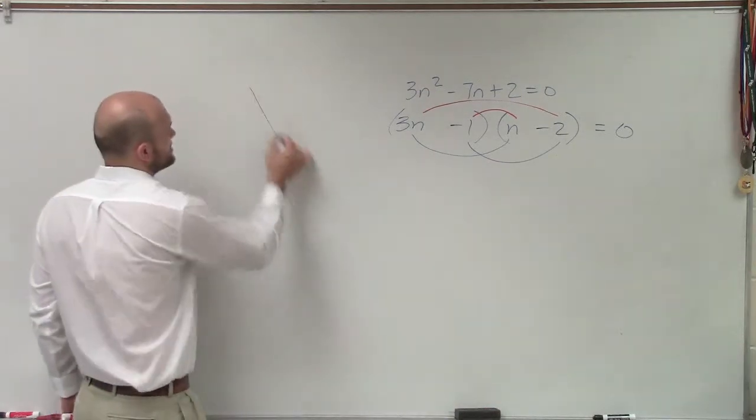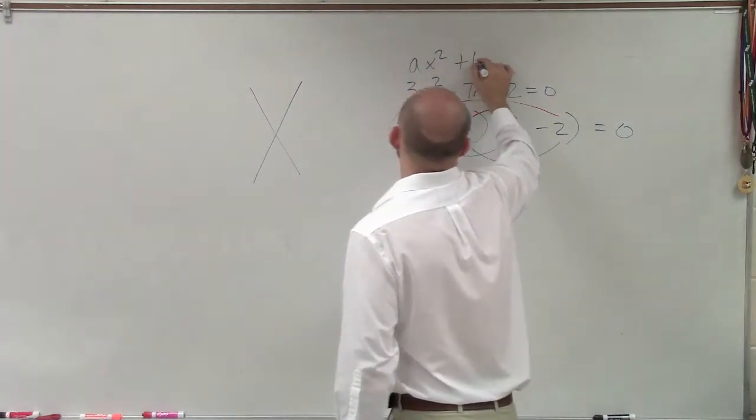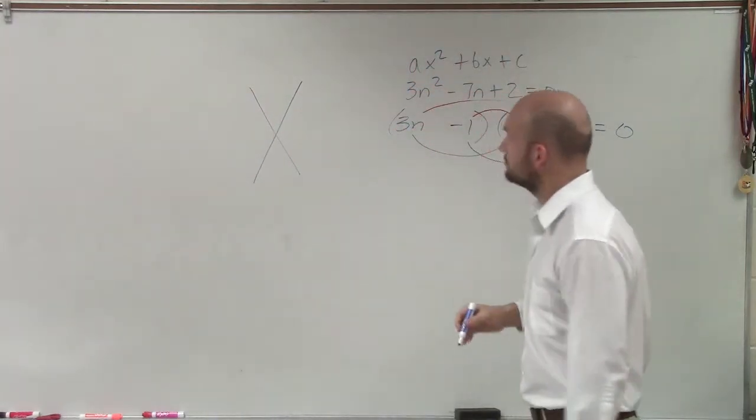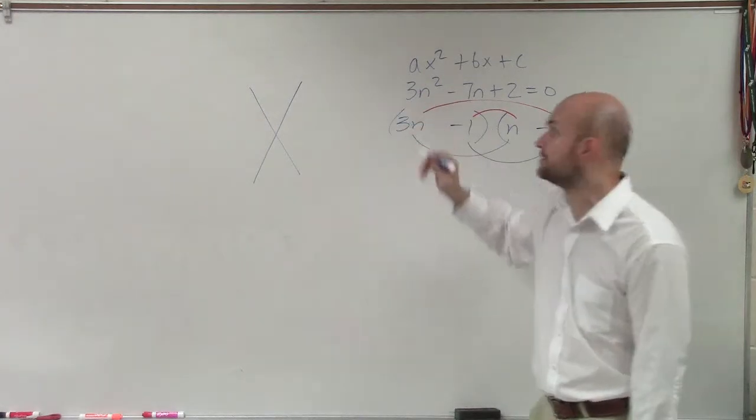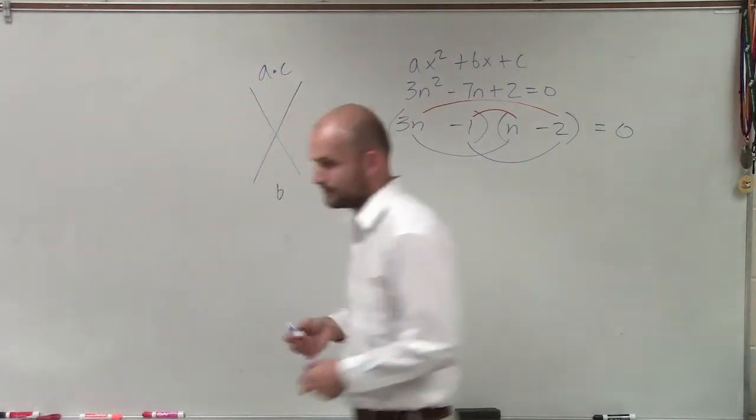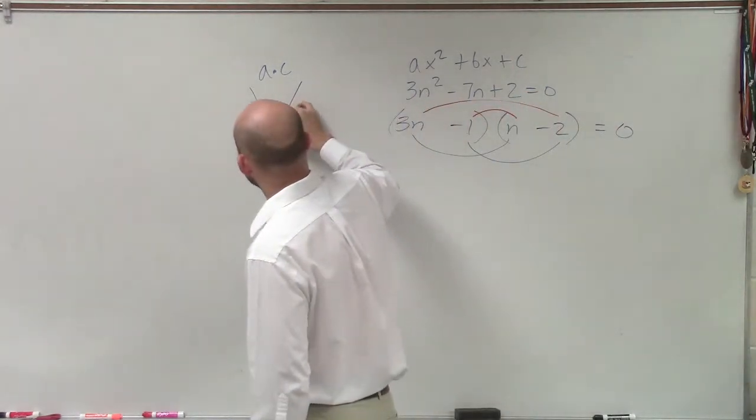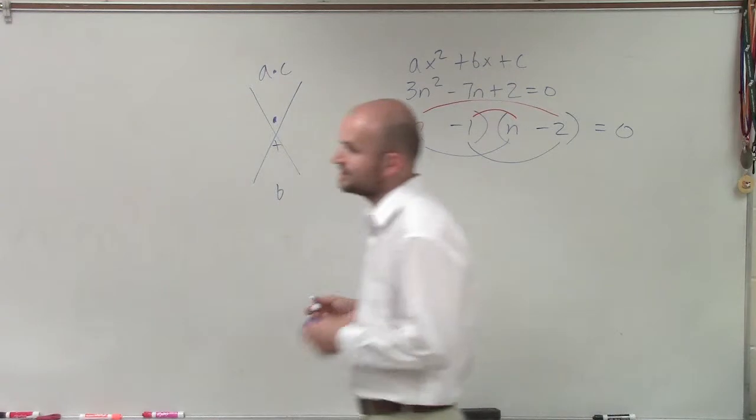But if you're like, man, I just don't understand that, we know that this is also in the quadratic form. So we have a other than 1. You do a times c and b. If you guys don't have this or you forget it, you can always write this down. You want to say what two numbers multiply to give me ac and then add to give me b.